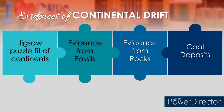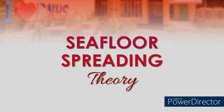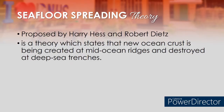Despite these evidences, Wegener's idea that the continents were once joined together was not accepted by the scientific community until the 1960s — he wasn't able to explain how drifting took place. During the 1960s, with the help of modern techniques and gadgets, scientists found out that the ocean floor is the site of drifting. This supports Wegener's continental drift theory and is called the seafloor spreading theory, proposed by Harry Hess and Robert Dietz. It states that new ocean crust is being created at mid-ocean ridges and destroyed at deep-sea trenches.